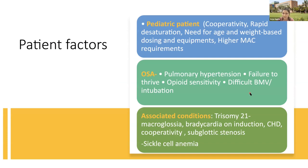Patient factors in a pediatric patient include lack of cooperation, rapid desaturation, and the need to calculate all equipment and drugs based on age and weight. Higher MAC requirements may lead to hemodynamic instability. OSA children can have pulmonary hypertension, failure to thrive, opioid sensitivity, and difficult bag-mask ventilation and intubation. Adenotonsillectomy is commonly indicated in children with Down syndrome, who may have macroglossia, bradycardia on induction, congenital heart disease, lack of cooperation, associated subglottic stenosis, and also sickle cell anemia.